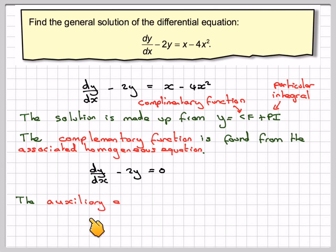The auxiliary equation from that will be m minus 2 is equal to zero, therefore m is equal to 2. And therefore the complementary function will be of the form Ae to the 2x, where it's always going to be Ae to the mx.